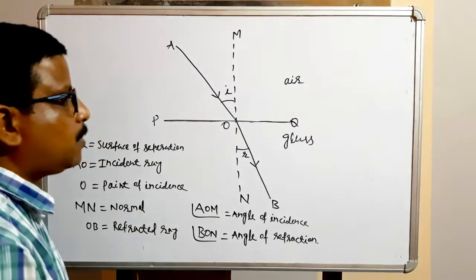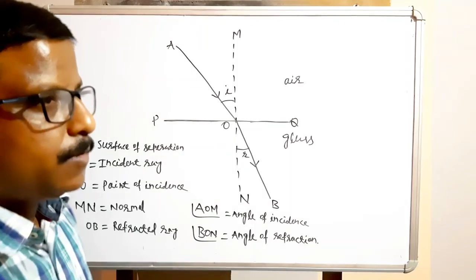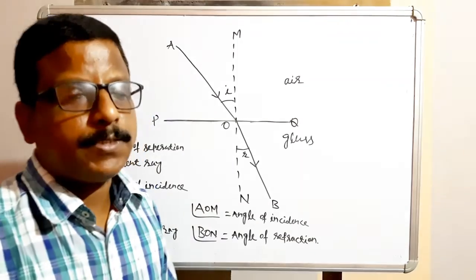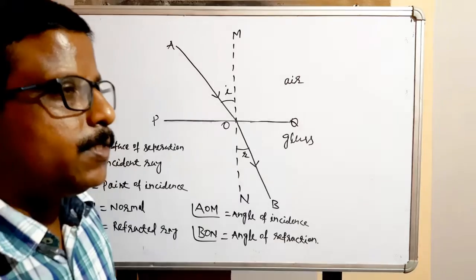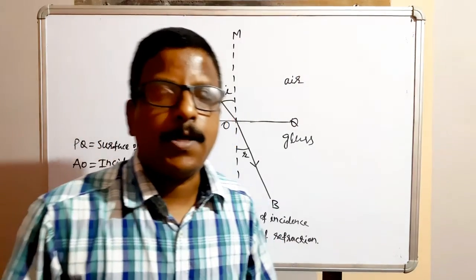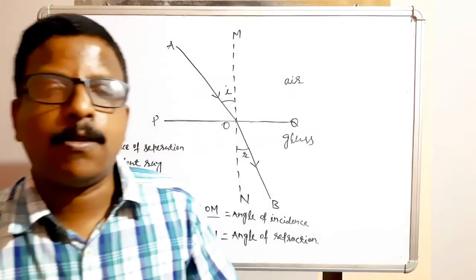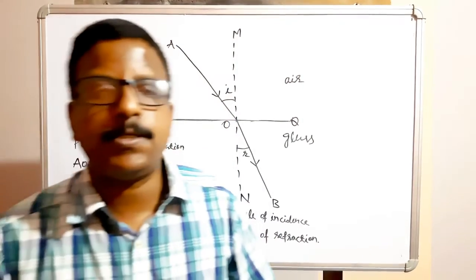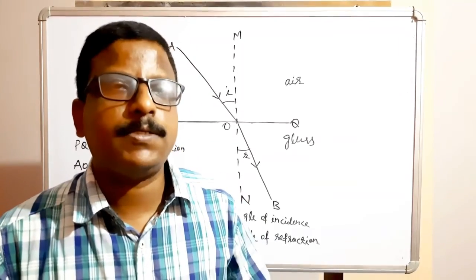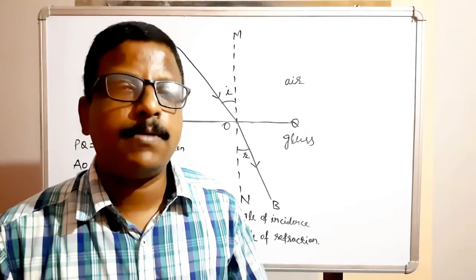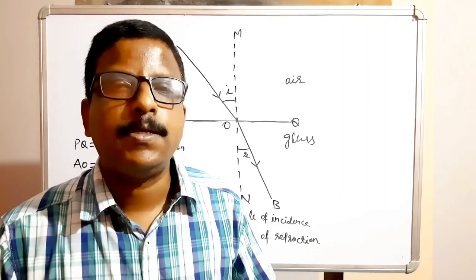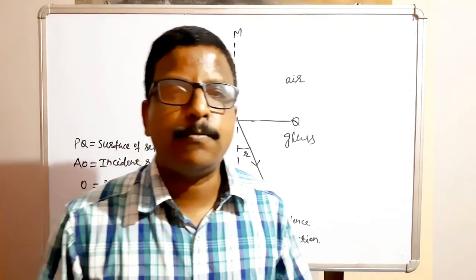So these are the terms — very important to know — related to refraction: incident ray AO, refracted ray OB, normal MN, surface of separation PQ, point of incidence O, angle of incidence i (angle AOM), and angle of refraction r (angle BON). This much in this video. In the next video I will explain the laws of refraction and how refraction occurs in a glass slab. Thank you.